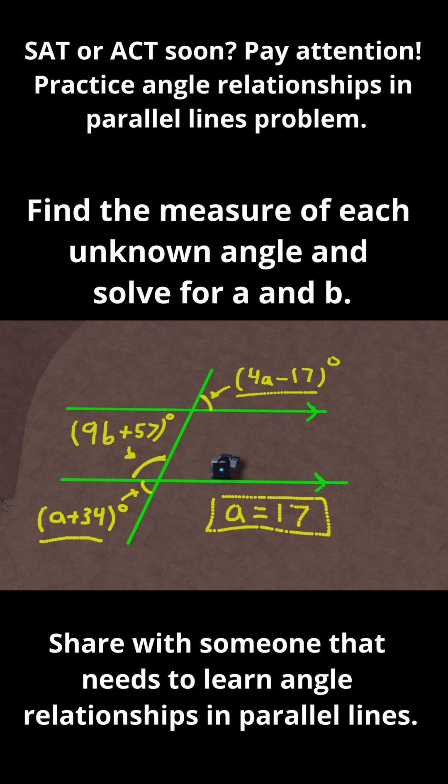Now, let's use that to solve for a plus 34 and 4a minus 17, so I can find those unknown angles. First, a plus 34. To find that angle, plug in a equals 17. So I can rewrite that as 17 plus 34, and 17 plus 34 is 51.